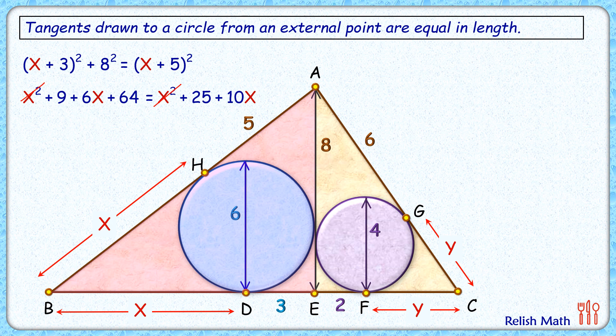Taking all x terms on one side, we get 6x - 10x on the LHS, and without x terms on the RHS, that is 25 - 73. Solving, we get x = 12 cm.